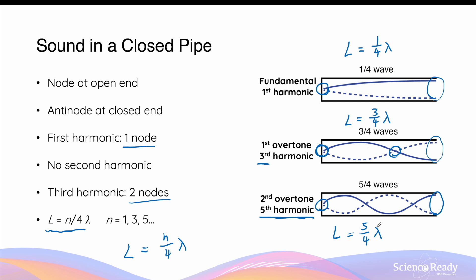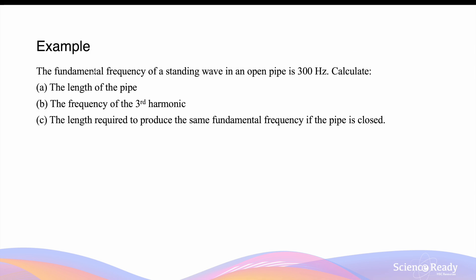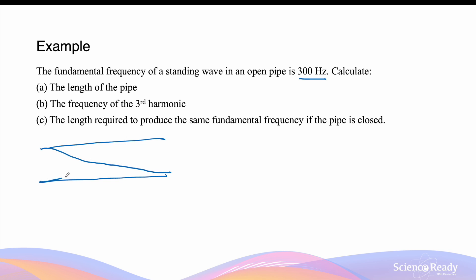Let's look at an example. The fundamental frequency of a standing wave in an open pipe is 300 Hz — calculate the length of the pipe. For these questions it is important to first identify whether the pipe is open or closed. Since the pipe is open, we draw an open pipe. For the fundamental frequency, the antinodes occur at both ends and the node is in the middle, so we can draw the wave with antinodes at each end and a node in the centre.